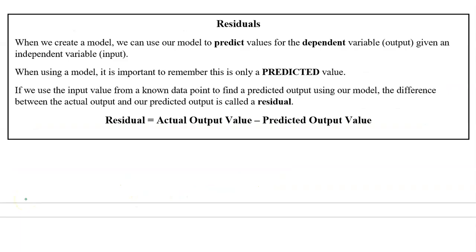When we create a model based on a set of data, we can use that model to predict an output value for a given input value. However, never forget that our model can only give us a predicted value. It's not a fact. It's like an educated guess. If we have a known value for a given input value, the difference between the actual value and our predicted value is called a residual. In other words, a residual is equal to the actual output value minus the predicted output value.